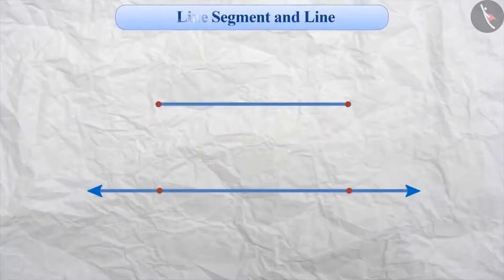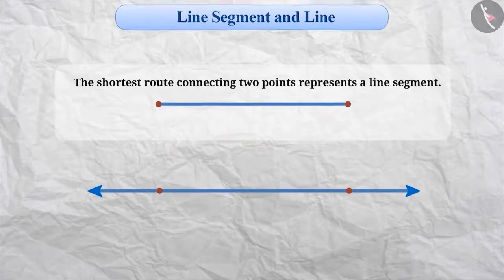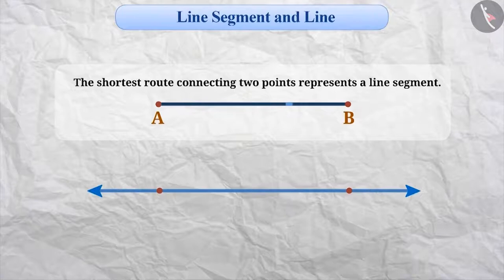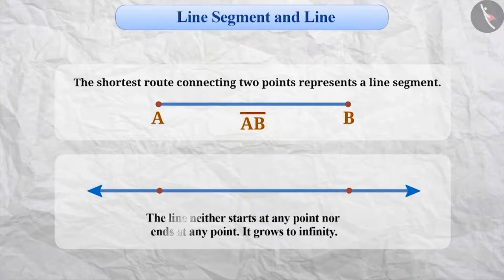You already know about line segment and line. You may recall that the shortest route connecting two points represents a line segment. For instance, here the shape obtained by joining point A and point B is the line segment AB. When we extend the line segment infinitely from both sides, we get a line. A line neither starts at a point nor does it end at a point. It increases infinitely, which is represented by an arrow mark on both ends.